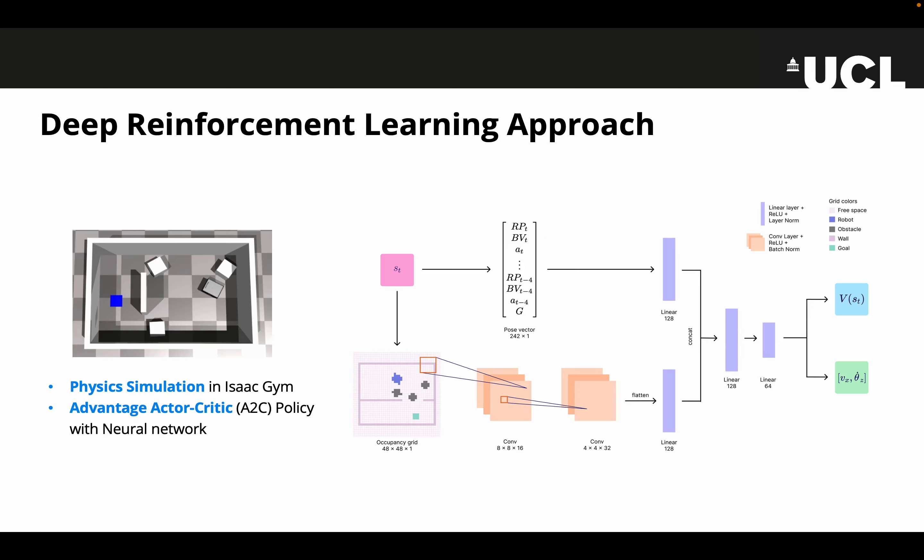We train an Advantage Actor-Critic policy in the NVIDIA iSEC gym simulator. An example environment we train in is shown in the screenshot on the left, where the robot tries to traverse through the obstacles to the goal position labeled in blue. A benefit of using a neural network is that it achieves constant computational complexity with an arbitrary number of obstacles. Our policy also pushes obstacles in a non-axial-aligned fashion, which is a much more realistic setting. Lastly, we also demonstrate that our algorithm is easy to implement on different robots using high-level controls, and that the physics simulation helps us smoothly bridge the sim-to-real gap.